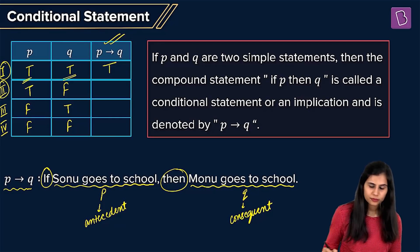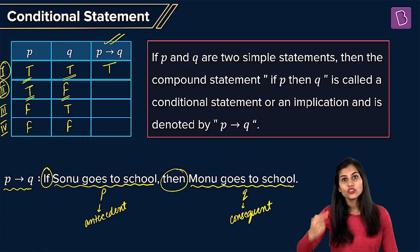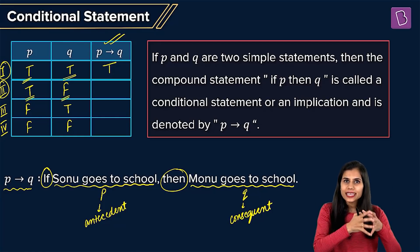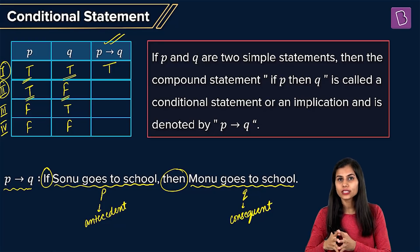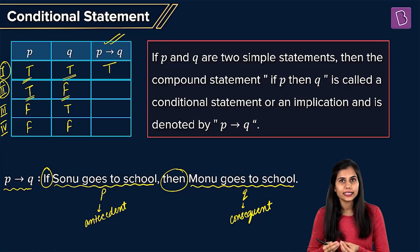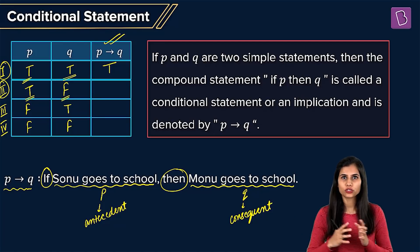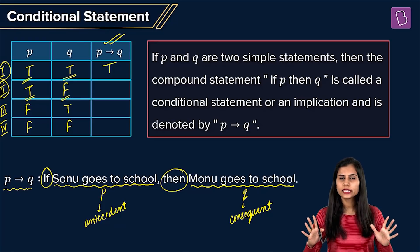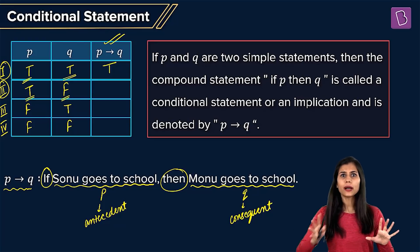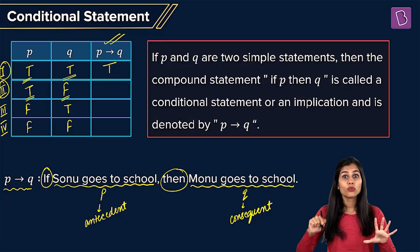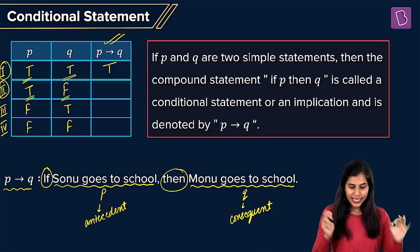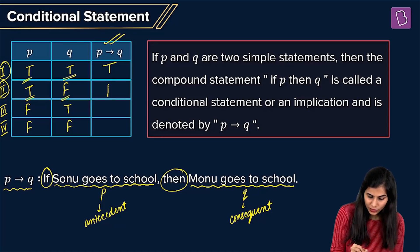Moving to the second scenario: Sonu goes to school but Monu does not go to school — P is true, Q is false. The deal said if Sonu goes, Monu will definitely go. But Sonu is going and Monu is not going. This violates the pact between them, and hence the outcome is false.